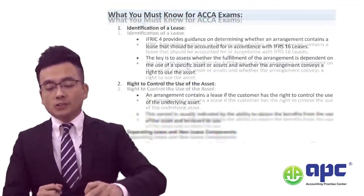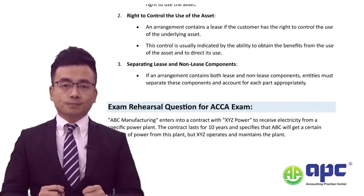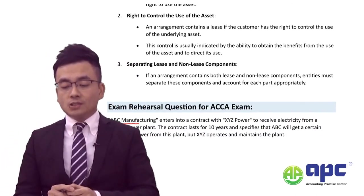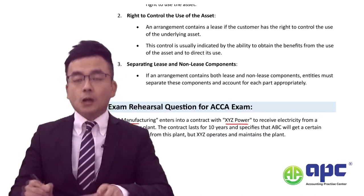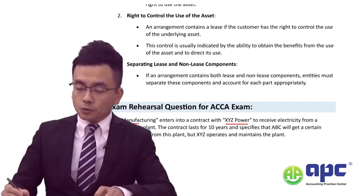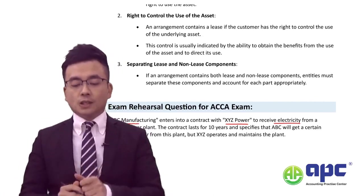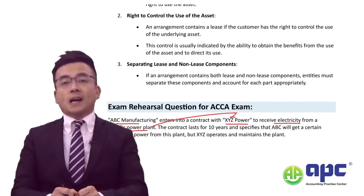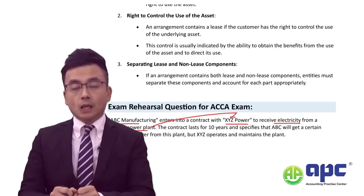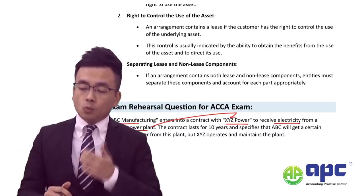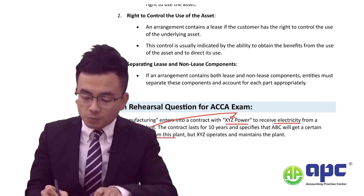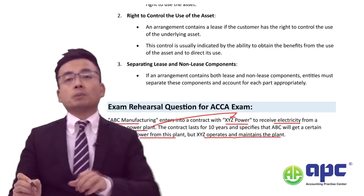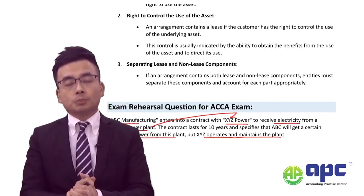The best way is to go through an example. Let's say that we are the ABC manufacturing company that enters into a contract with XYZ Power, so that from ABC's point of view we can receive electricity from the specific power plant provided by XYZ Power. The contract lasts for 10 years, and we will get a certain amount of power from this plant, but XYZ Power operates and maintains the plant rather than ABC.